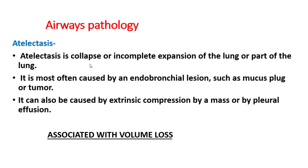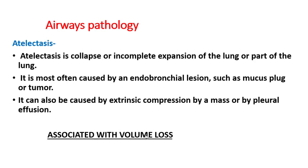Atelectasis is a collapse or incomplete expansion of the lung or part of the lung, most often caused by endobronchial lesions such as mucus plugs or tumor, or extrinsic compression by a mass or pleural effusion. Importantly, atelectasis is associated with volume loss. The lobe migrates superiorly and medially toward the apex, with elevation of the minor fissure and lower lobe arteries.